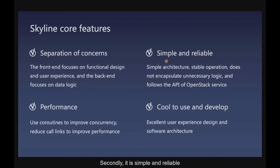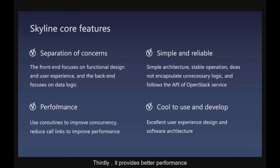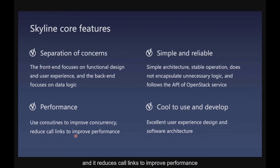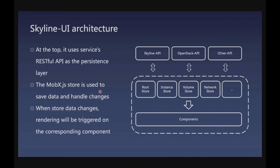Secondly, Skyline is simple and reliable. With a simple architecture and stable operation, it doesn't encapsulate unnecessary logic and follows the API of the OpenStack service. Thirdly, it provides better performance — using coroutines to improve concurrency and reducing API calls to improve performance. Lastly, it is cool to use and develop, providing excellent user experience design and software architecture.